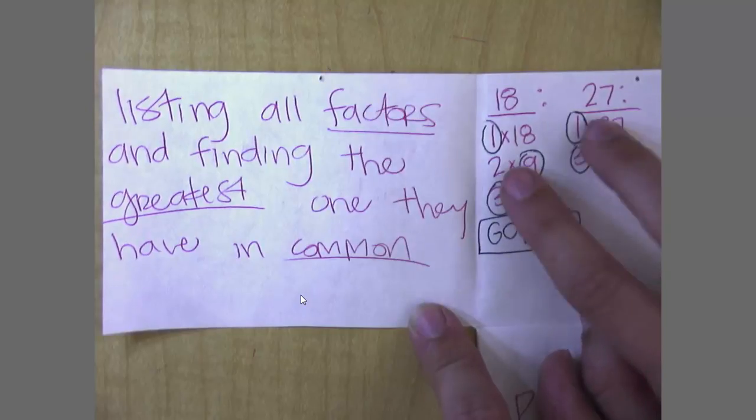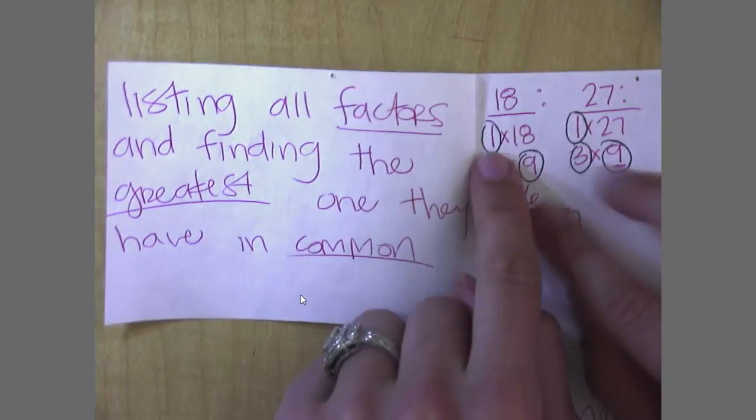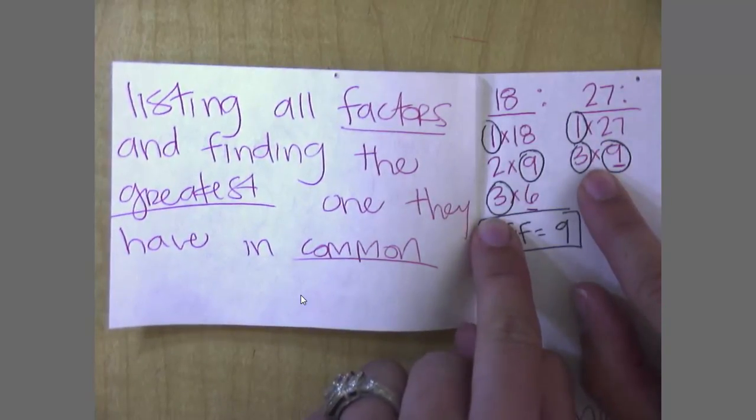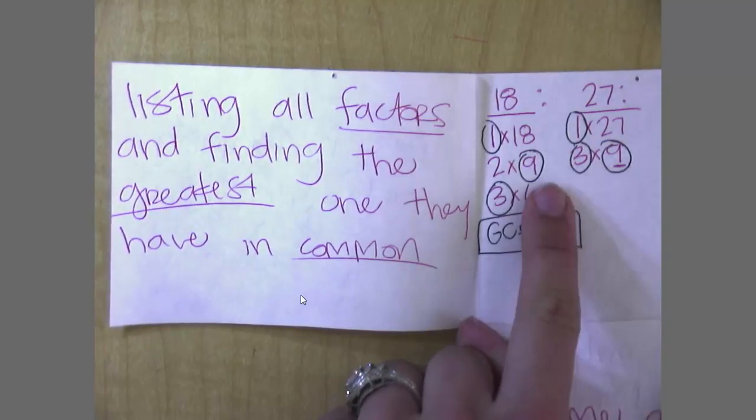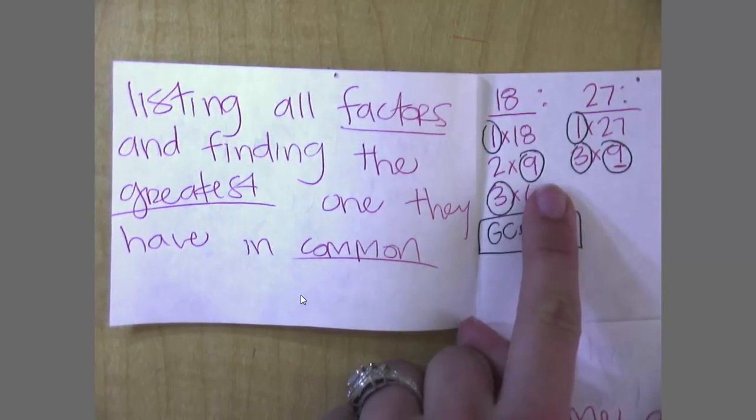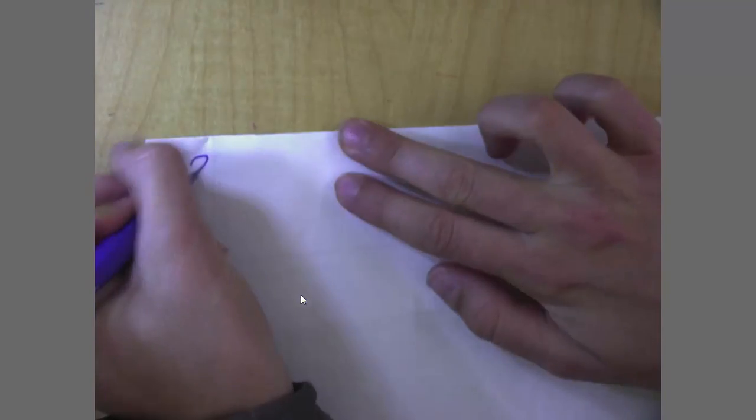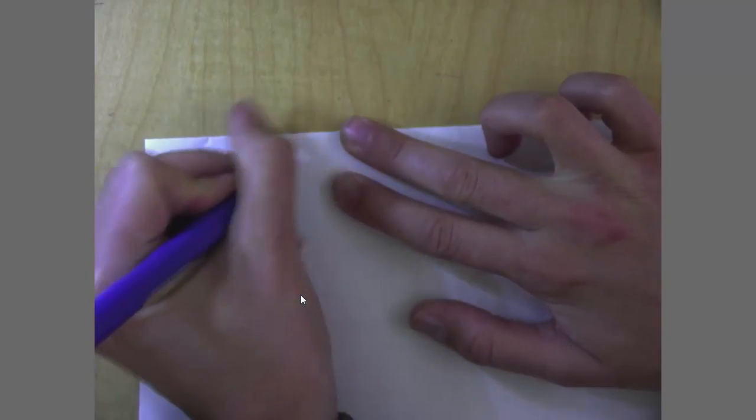So once I've listed the factors of each, I go through and circle the ones that they have in common. And then I want to find the largest number that they both have. So I'm taking a look at my very largest number. Let's look at another example of this. We're going to do 32 and 72.